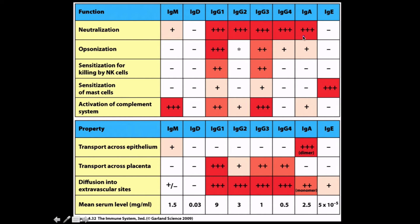IgG3 is a weak-to-medium opsonin, medium strength with neutrophils, weak with mast cells, but very strong at activating complement. IgG4 is unusual — it only performs neutralization, does not activate complement, does not work with mast cells, and actually has anti-inflammatory properties, which we'll discuss later. IgA performs neutralization, is a mild opsonin, doesn't work well with NK cells or mast cells, and barely activates complement — which makes sense given where it's located.